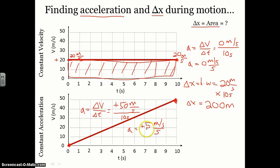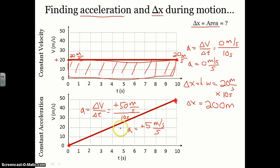This tells us the velocity is increasing by 5 meters per second each second. We can see that in one second it goes up to 5 meters per second, in another second up to 10 meters per second — so the change each second is positive 5 meters per second.